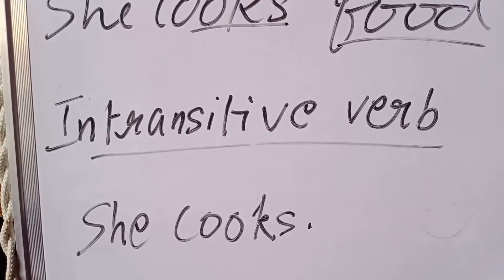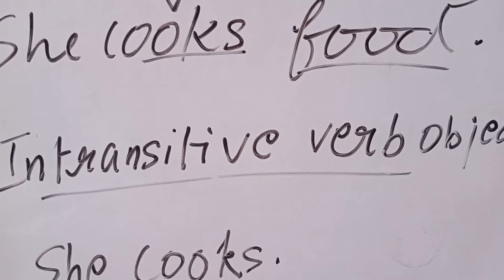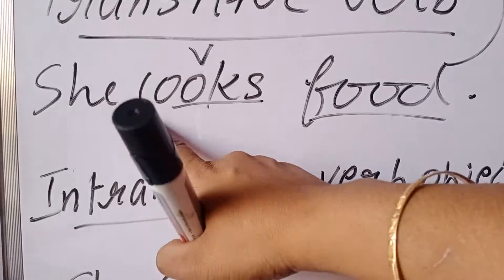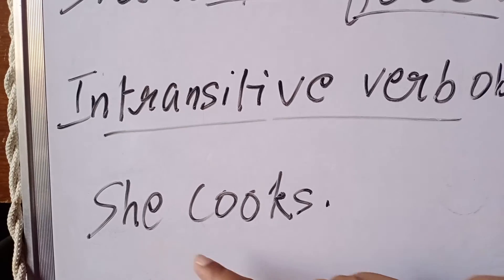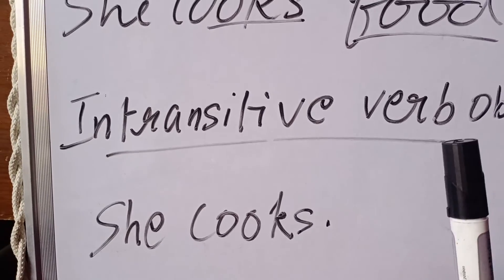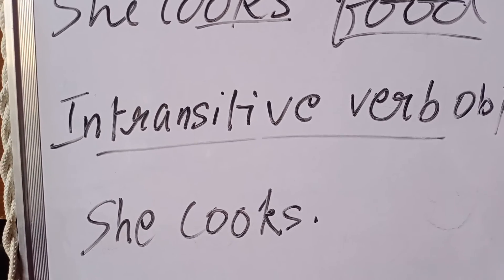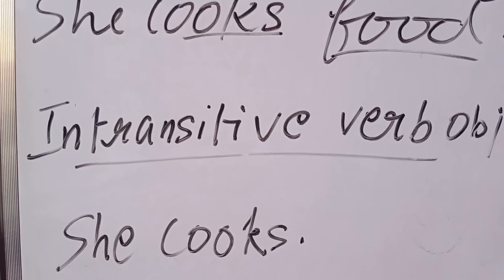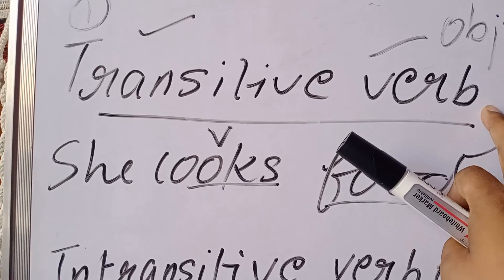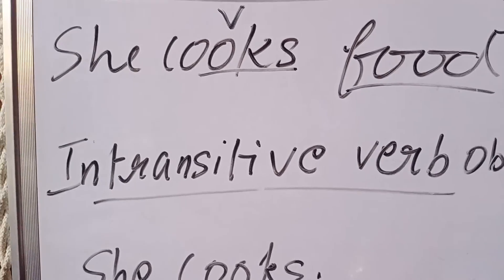Intransitive means the verb does not require an object. If I take the same example — 'She cooks food,' food was my object — but in intransitive, what happens? 'She cooks.' Now there is no object. When we ask the question 'what?' in the sentence and there is no answer, then it is intransitive. In Hindi, Akarmak is simple: when you ask 'what?' and there is no answer, the verb is intransitive. When there is an answer to 'what?', it is transitive.